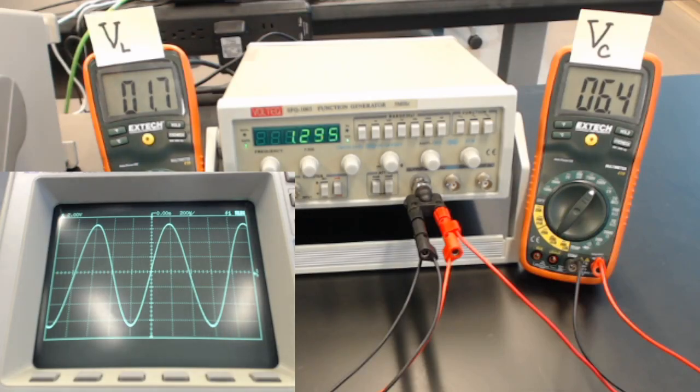Okay, let's take some data. I've got the frequency set to 1.295 kilohertz. The voltage across the inductor is 1.7 volts. The voltage across the capacitor is 6.4 volts. You can see they don't match.